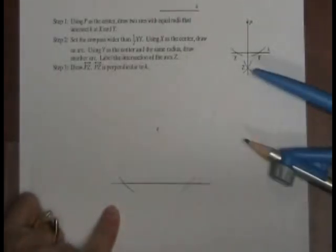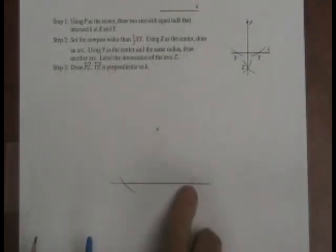The next step for me to do is to set my compass for a distance that's more than halfway across this. That's more than halfway across that.